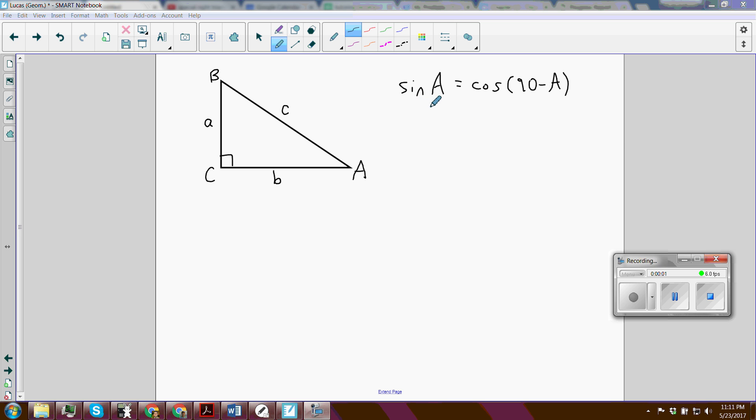We want to prove that the sine of angle A is equal to the cosine of 90 minus angle A.